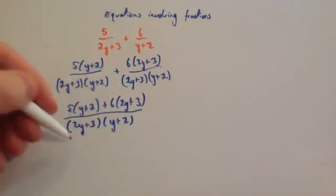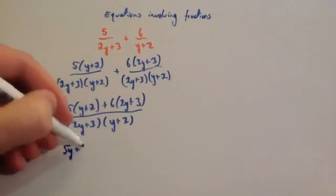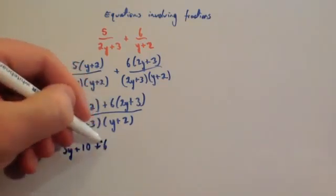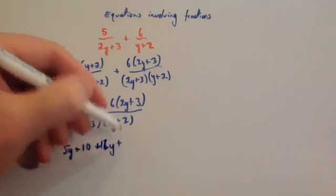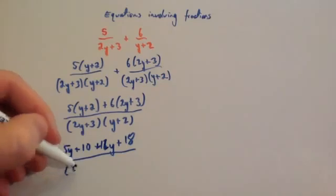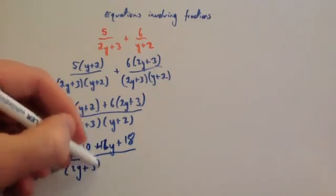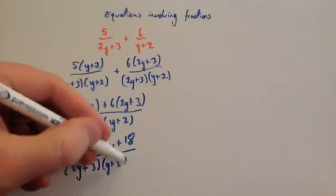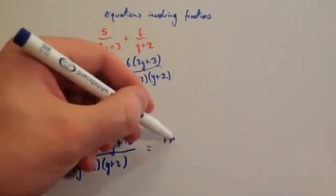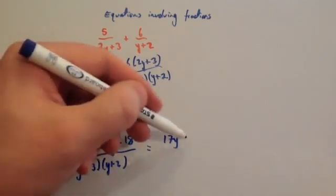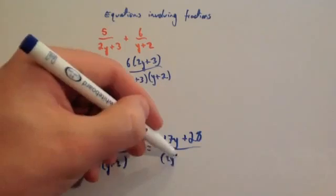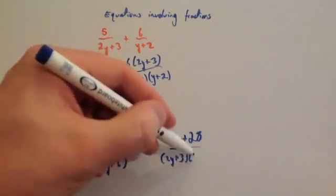Let's expand the top line: 5y plus 10 plus 12y plus 18, divided by (2y plus 3)(y plus 2). Simplifying the top: 5y plus 12y is 17y, and 10 plus 18 is 28. So that's 17y plus 28 all over (2y plus 3)(y plus 2).